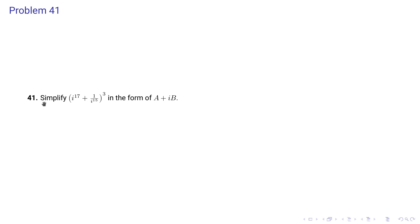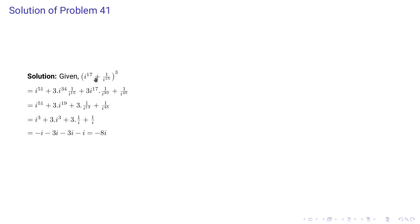Problem 41 says: simplify (i^17 + 1/i^15)^3 in the form a + ib. We expand this using (a+b)^3 = a^3 + 3a^2b + 3ab^2 + b^3. So i^17 cubed gives i^51, the second term is 3 × i^34 / i^15, the third term is 3 × i^17 × (1/i^13), and the last term is 1/i^45.